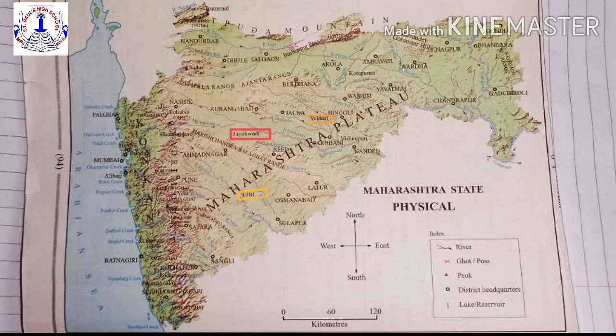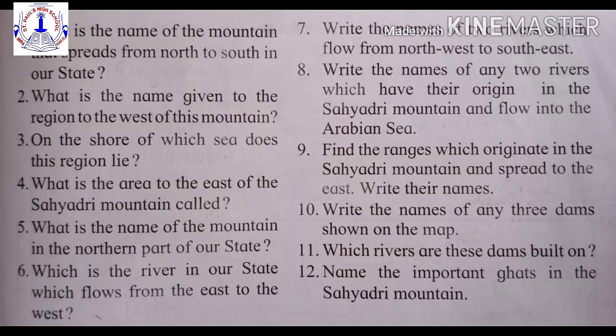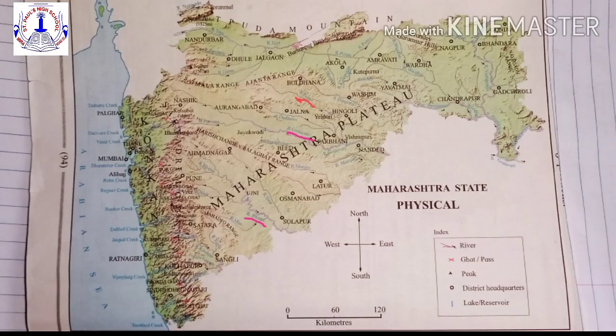Tenth question: write the names of any three dams shown on the map. The answers are Ujani Dam, Jayakwadi Dam, and Yeldari Dam. Eleventh question: which rivers are these dams built on? Ujani Dam is built on River Bhima, Jayakwadi Dam on River Godavari, and Yeldari Dam on River Purna.